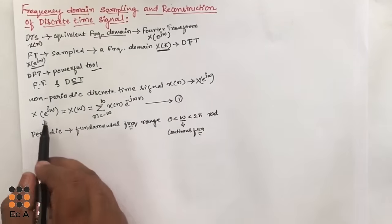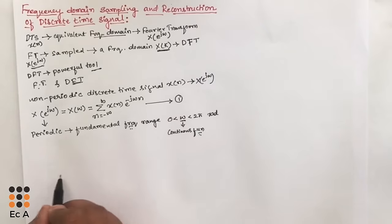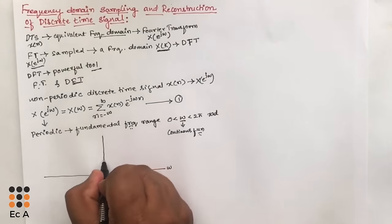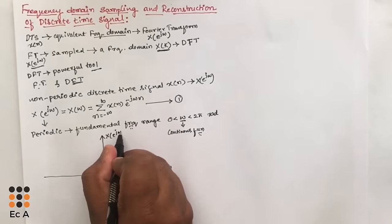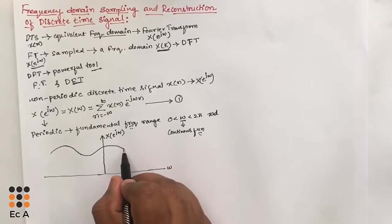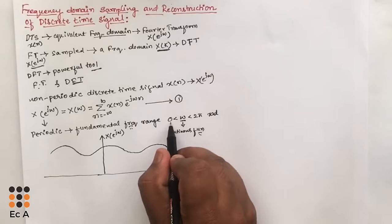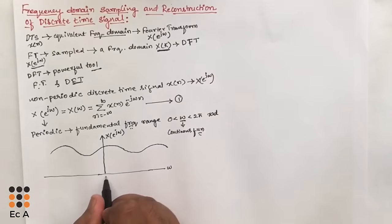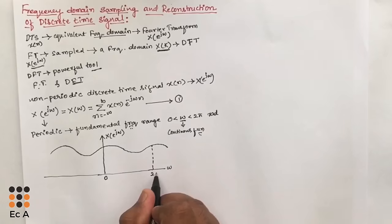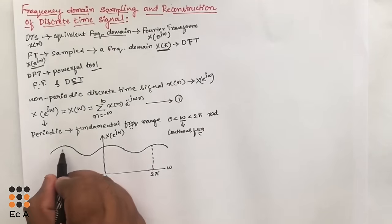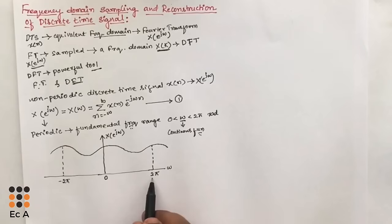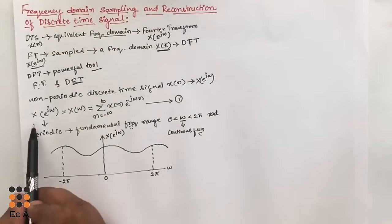Let us graphically represent x of e to the power of j omega, with omega on the x-axis and x of e to the power of j omega on the y-axis. We have a continuous signal, and omega ranges between 0 to 2 pi. After each interval of 0 to 2 pi, the signal repeats. Towards the right it extends to 2 pi, and towards the left to minus 2 pi.